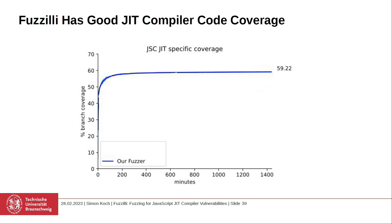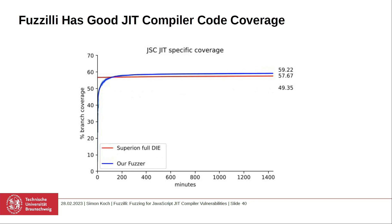Let's have a look at JavaScriptCore. Since we want to target just-in-time compiler vulnerabilities, we had a look specifically at JIT compiler code coverage. Within 24 hours, Fuzzilli reaches a code coverage of about 59%. To assess how good that is, you have to compare against another fuzzer — against the recent state of the art. We chose Superion, another JavaScript fuzzer. The big difference between Fuzzilli and Superion is that Superion requires an input seed corpus. We weren't able to find their input seed corpus, so we chose to use the Dio corpus, and ran Superion with that, which was able to reach about 57-58% coverage.